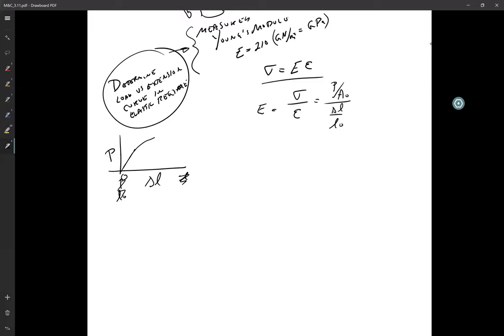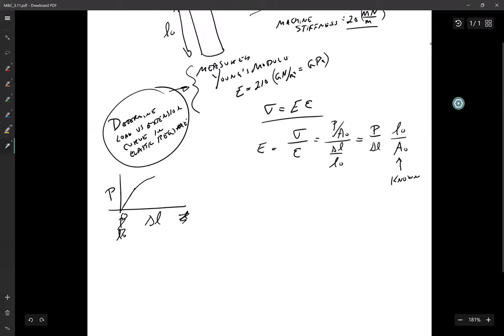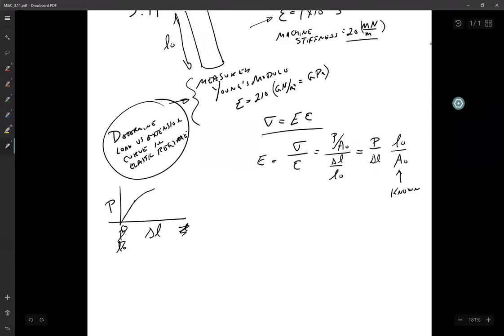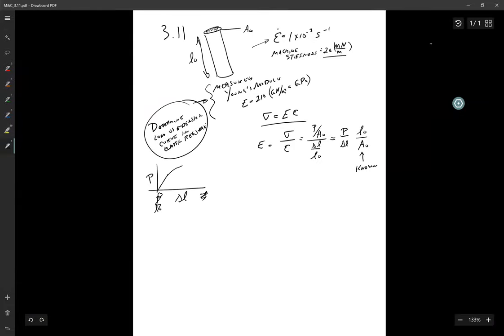So it's worth pointing out here that I could call this Delta L or Delta L ranges from zero to the degree of extension. That's just another way of representing that. So that means that here I get force per change in length, L0 over A0. So that's known. And this is in units of Newton per meter. So that has the same units as stiffness.